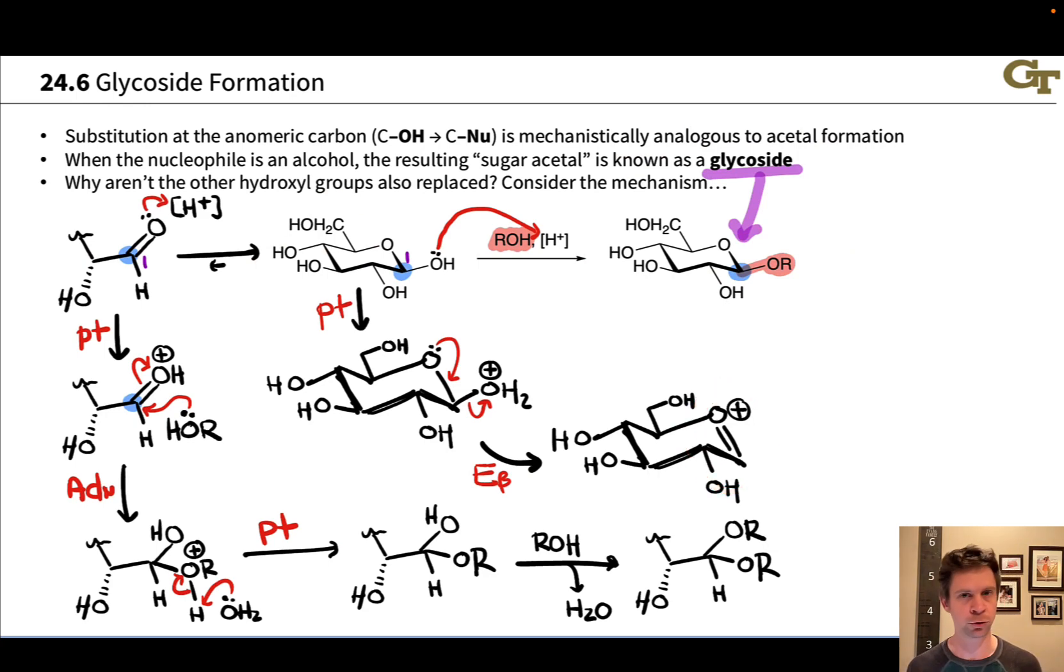If we tried to do this dance of put a proton on and then lose water from any of the other hydroxyls, we'd end up with a much less stable cation. For example, if we tried to do that here, we'd end up with a primary carbocation and that's going to be a no-no. So far and away, the most stable place to lose water from is the anomeric carbon.